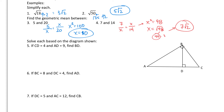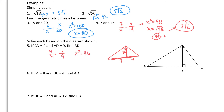Now let's find geometric means based on triangle diagrams. The next problem tells us that CD is 4, AD is 9, and we need to find BD. Drawing this out, BD would be our geometric mean since that's the altitude dropped to the hypotenuse. It's the geometric mean of the two segments it creates: 4 and 9. So X squared equals 4 times 9, which is 36, and X equals 6.